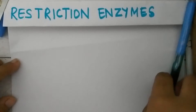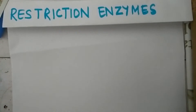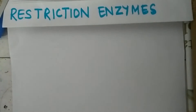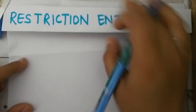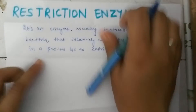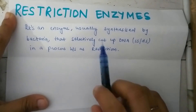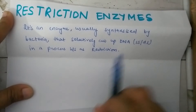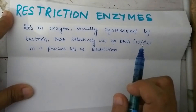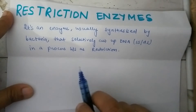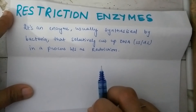The restriction enzyme is an enzyme which is usually synthesized by bacteria, and it selectively cuts up DNA — whether it is single-stranded or double-stranded — in a process called restriction.